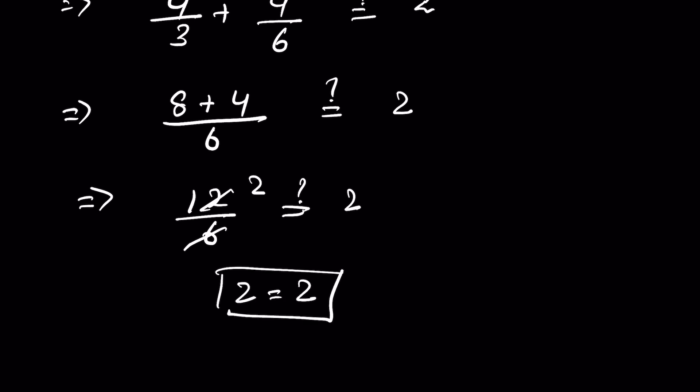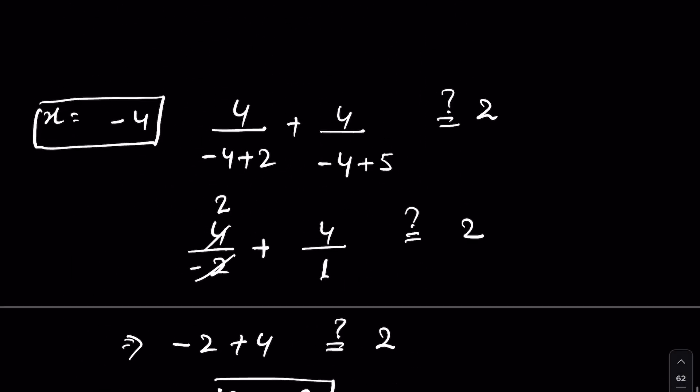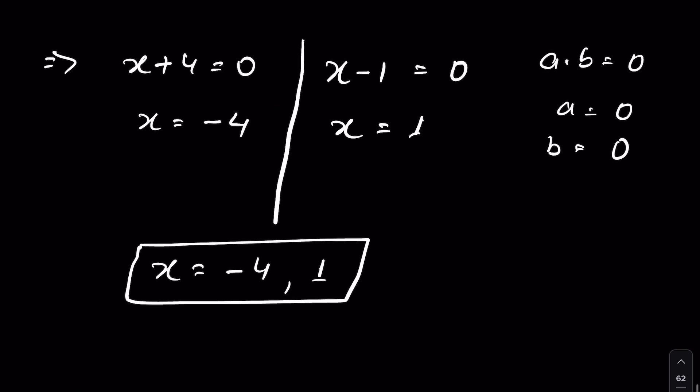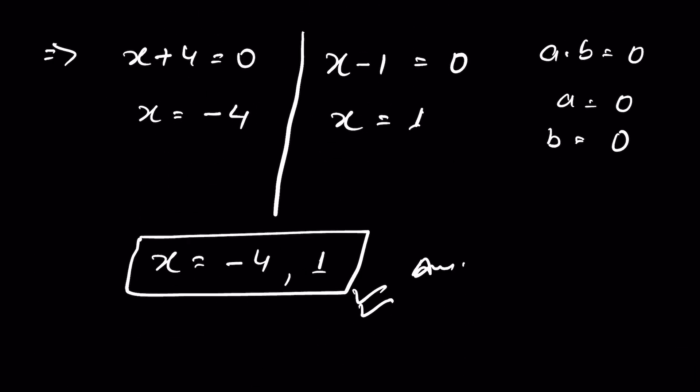Therefore the two values for x are −4 and 1. How did you solve it? Let me know in the comment section. Thanks for watching.